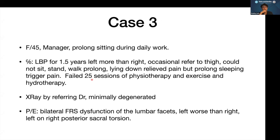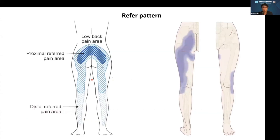The third case is a 45-year-old lady manager with a sedentary lifestyle and low back pain for a year and a half, left more than right, occasionally referred to the thigh. She could not sit, stand, or walk for long. Prolonged sleeping triggered pain in the morning. She failed 225 sessions of physiotherapy, exercise, and hydrotherapy. X-ray showed minimally degenerated lumbar spine. Physical examination showed bilateral FRS dysfunction of the lumbar facet — left worse than right — and left-on-right posterior sacral torsion.